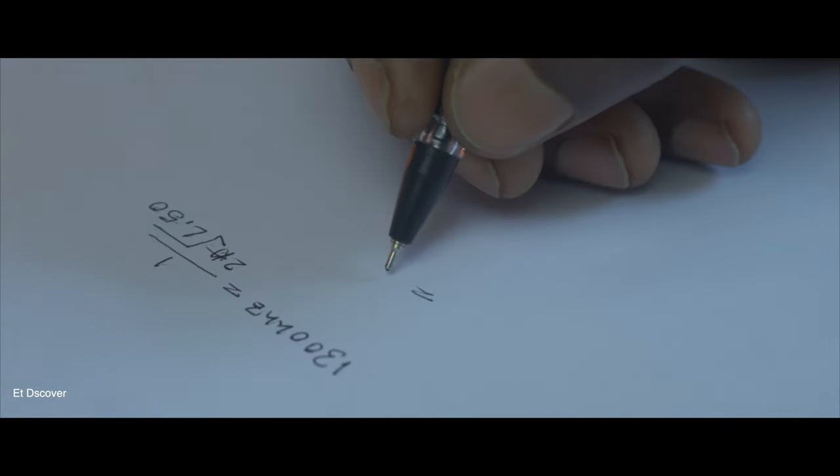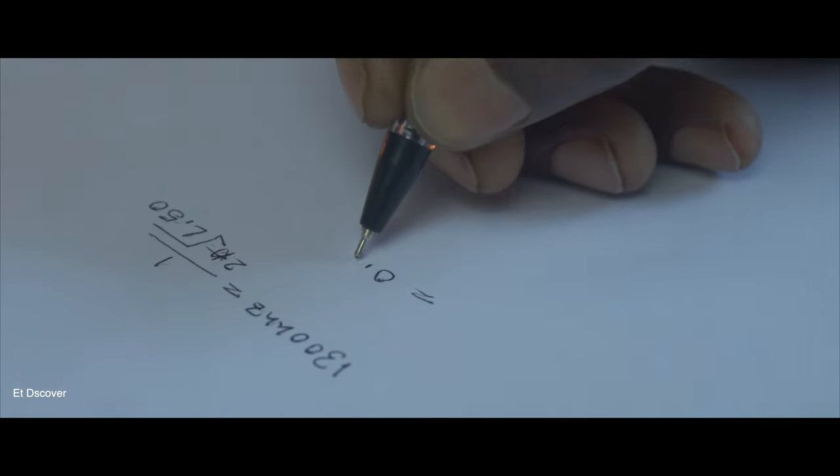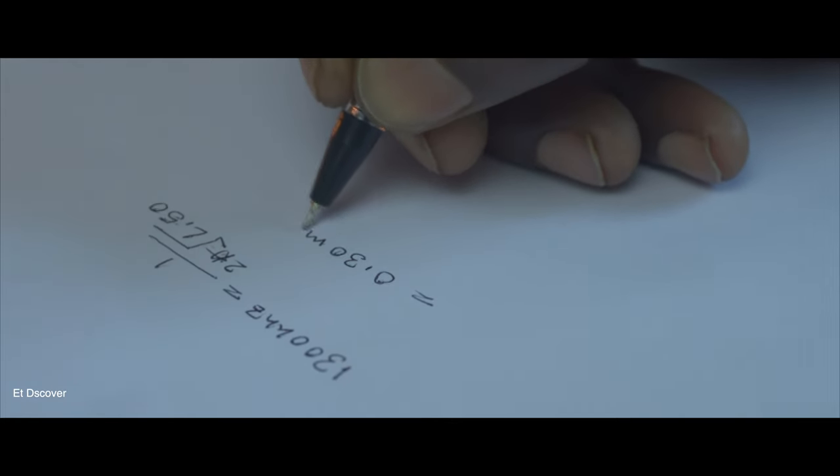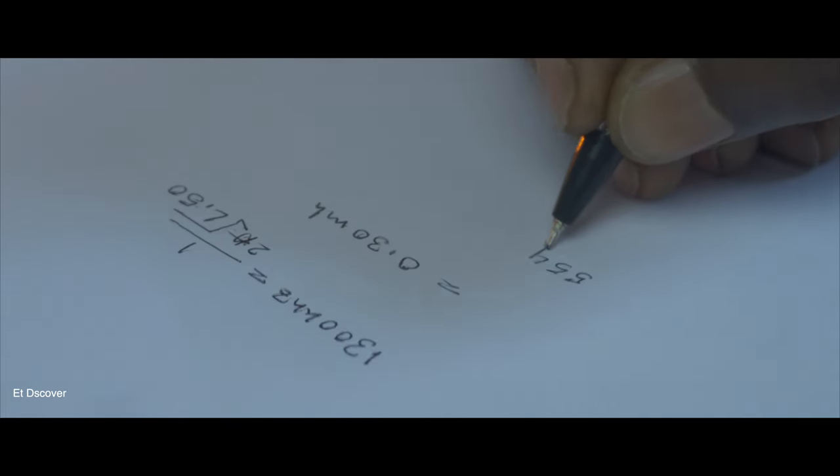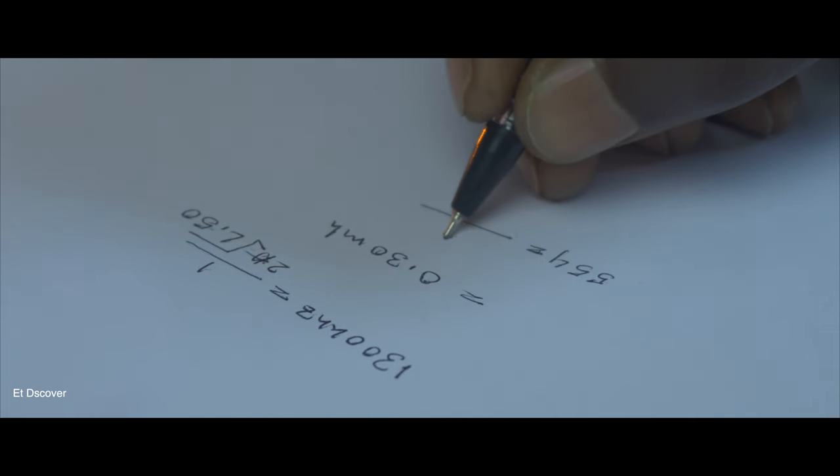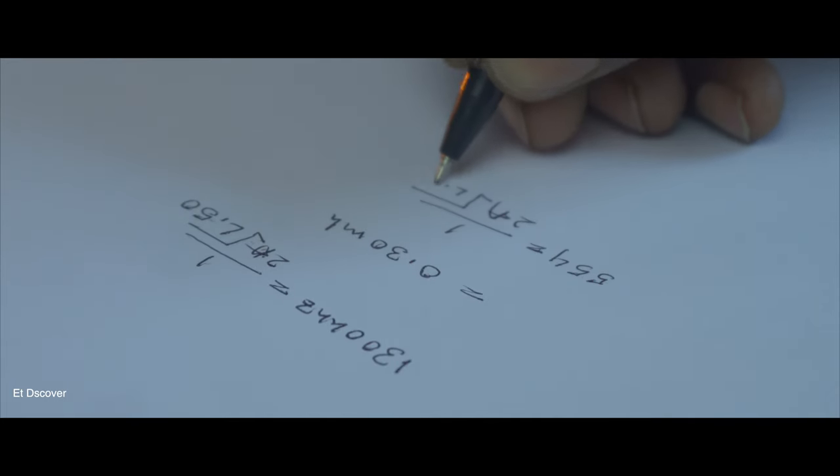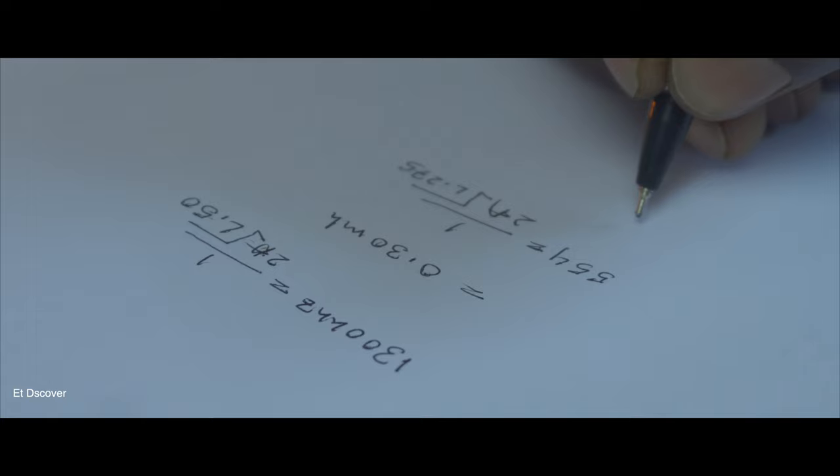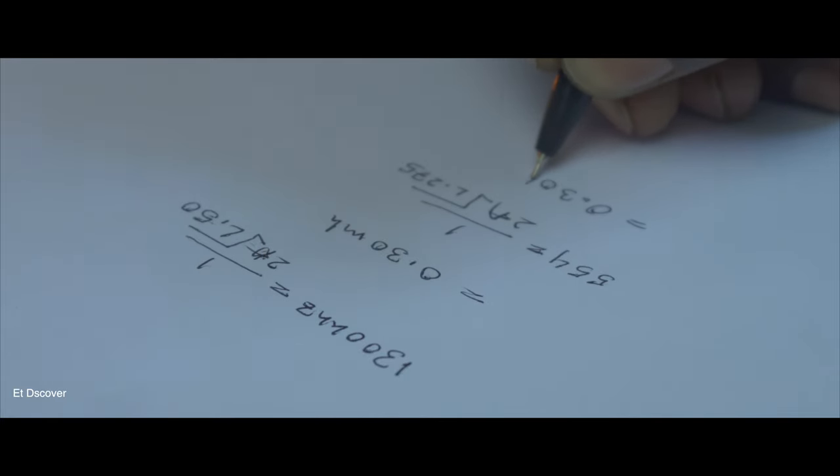Suppose my frequency will be 1300 kilohertz and capacitance will be 50 pF, then by calculating in this formula our answer will be 0.30 millihenry inductor. Conversely, if we assume my frequency is 554 kilohertz and the capacitance will be 275 pF, then our answer will be 0.30 millihenry.